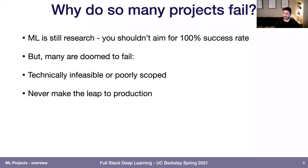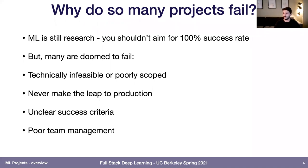Projects get stuck in proof of concept phase — they have a cool working demo, but the demo never makes it to production. Or the demo makes it to production, but it's never really clear what the success criteria for the project is, so it never gets greenlit. Or all this falls apart because the team is managed poorly to begin with. We're going to talk about some of these things and how you can avoid these problems when picking and scoping machine learning projects.